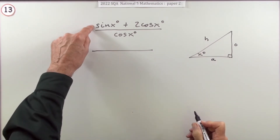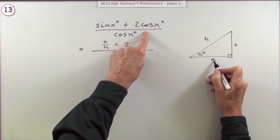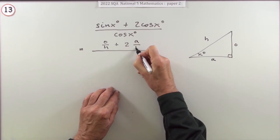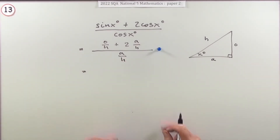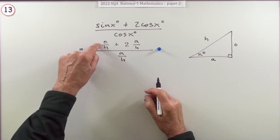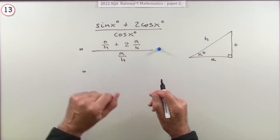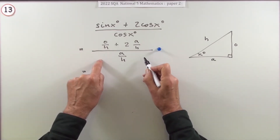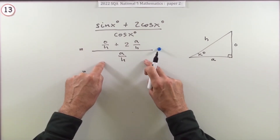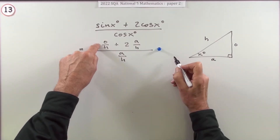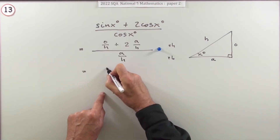In simple cases, sinx is the opposite over hypotenuse, 2cosx is 2 times adjacent over hypotenuse, and cosx in the denominator is adjacent over hypotenuse. That gives the first mark. Now you have fractions within fractions — a complex fraction. Rather than adding and dividing fractions, you simplify by multiplying the top and bottom by h. Those h parts cancel out and you're left with opposite plus 2 times adjacent, all over adjacent.